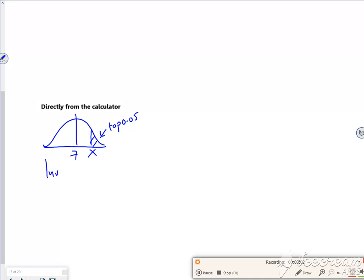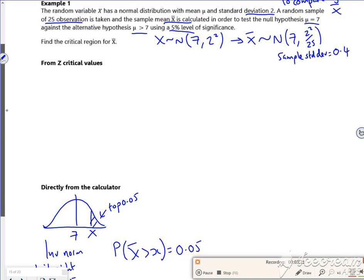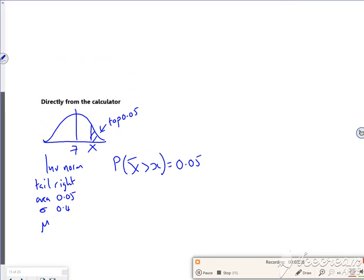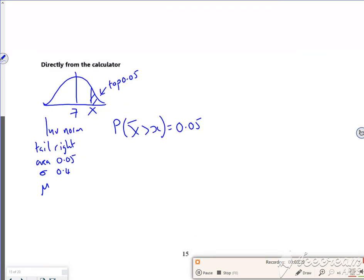So if I do an inverse normal, I'm looking for the probability that X bar is greater than X is 0.05. So I'm going to do an inverse normal with the tail as right. The area is 0.05. I've got to use those values up there. So sigma is 0.4, mu is 7. And that gives me out an X value of 8.316.